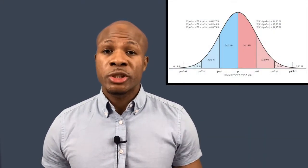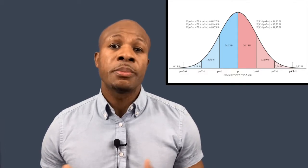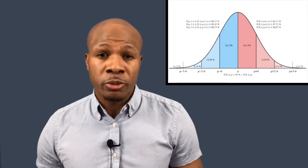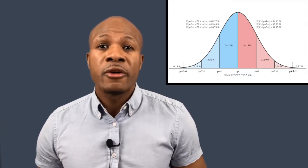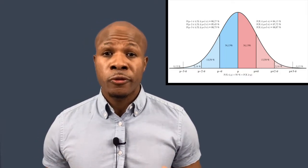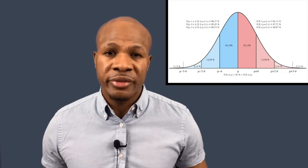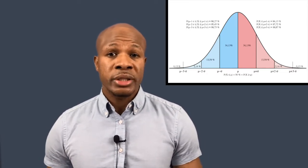A normal distribution is a bell curve — it's symmetrical. Half the people did worse than the average and half did better. The average and the median are the same number. A big property of normal distribution: 68% of all patients are within one standard deviation, 95% are within two standard deviations, and 99% are within three. Basically everybody is covered within three standard deviations.